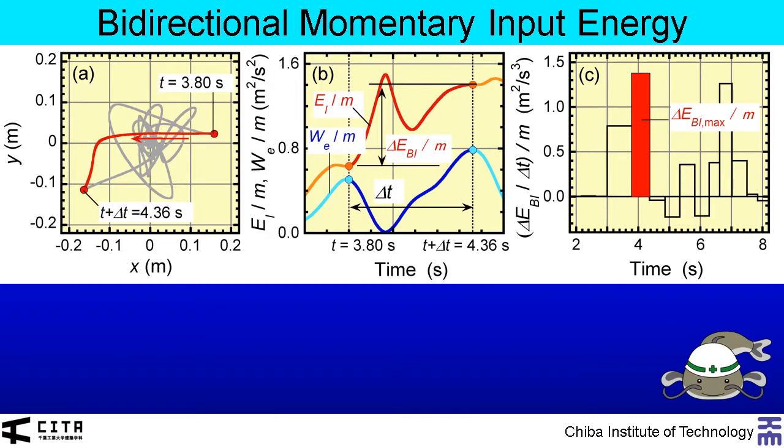In this study, the bidirectional momentary input energy is defined as follows. Here shows an example of the response of the model. This is a displacement orbit. The red curve in the orbit is a half-cycle of structural response. In this study, the beginning and ending of a half-cycle of structural response is defined as the time at the local maximum of potential energy.